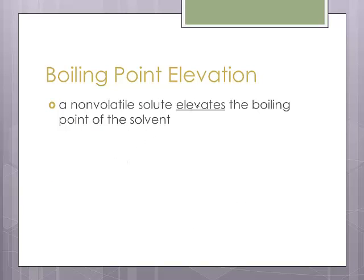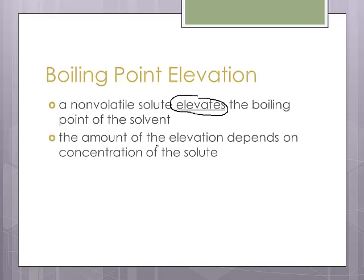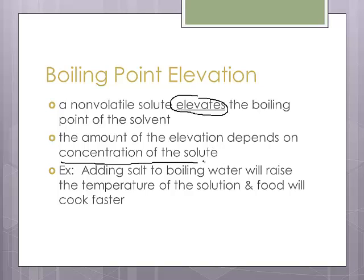Now, boiling point elevation is going to be the opposite. A non-volatile solute will elevate the boiling point of the solvent, and again, the amount of the elevation will depend on the concentration. For example, if you add salt to boiling water, it will actually raise the temperature of the solution slightly, and the food will actually cook just a little bit faster. Not a ton, but our normal boiling point of water is 100 degrees Celsius. A lot of times you can raise it maybe to 102. The more you add, the higher you can get. And that's really all you have to know with colligative properties. Know the definitions, be able to understand some examples.